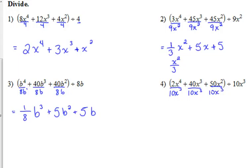Let's do one more because it introduces one more idea here to us, so let's divide all those terms by 10x cubed. 2 over 10 reduces to 1 over 5. x to the fourth over x cubed is x. 40 over 10 reduces to 4. x cubed over x cubed is 1, so that's just 4 by itself. 50 over 10 is 5. x squared over x cubed.